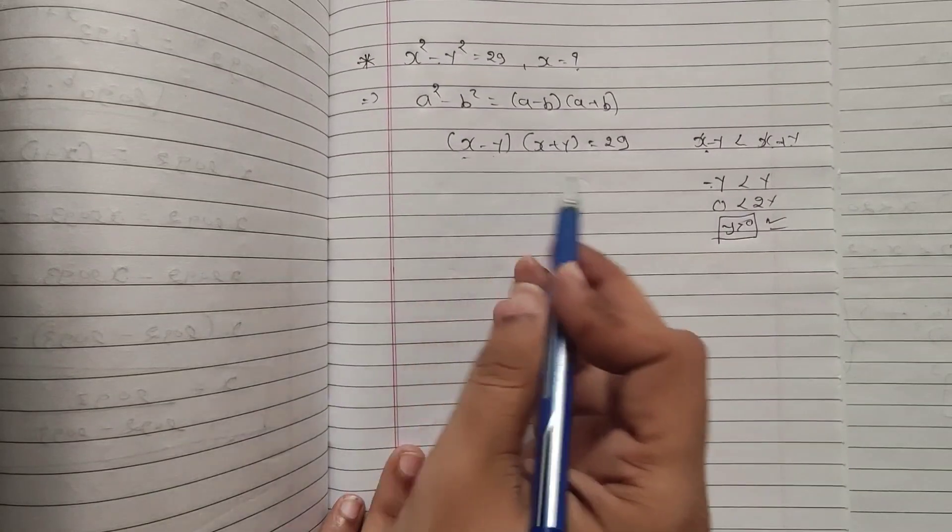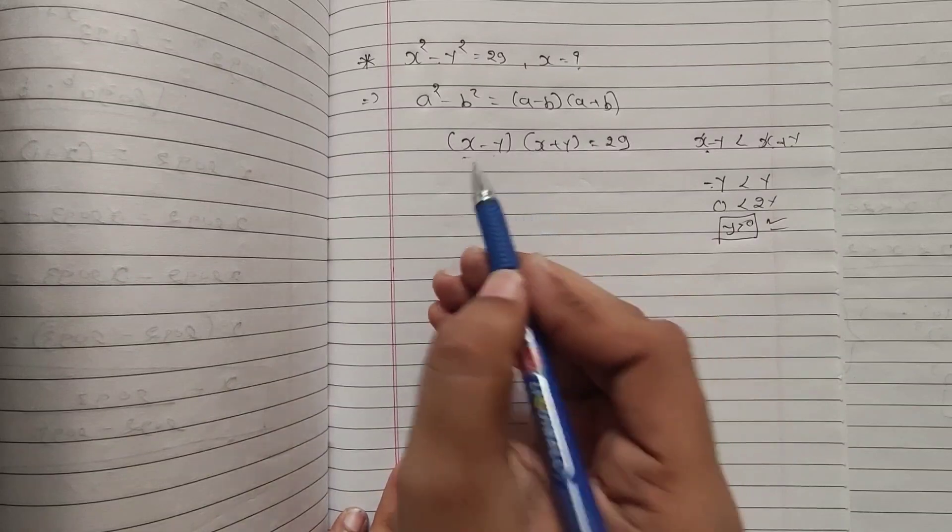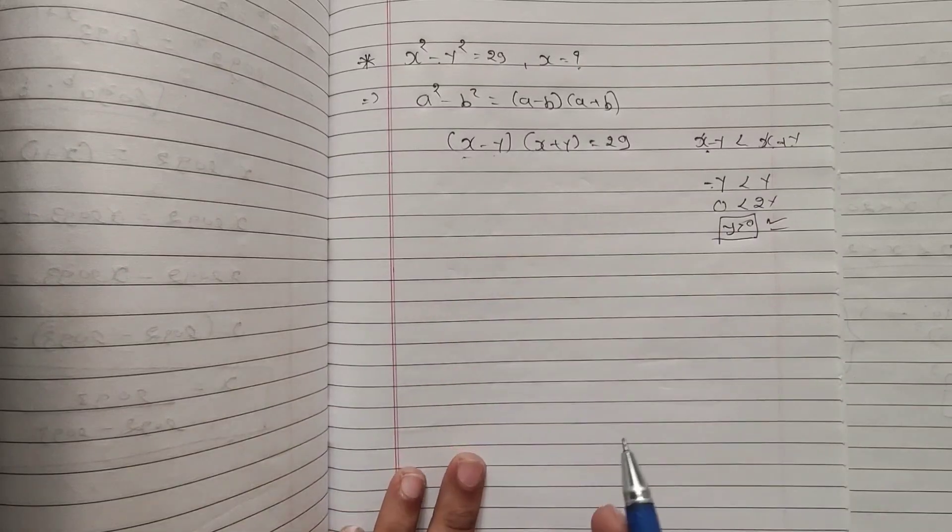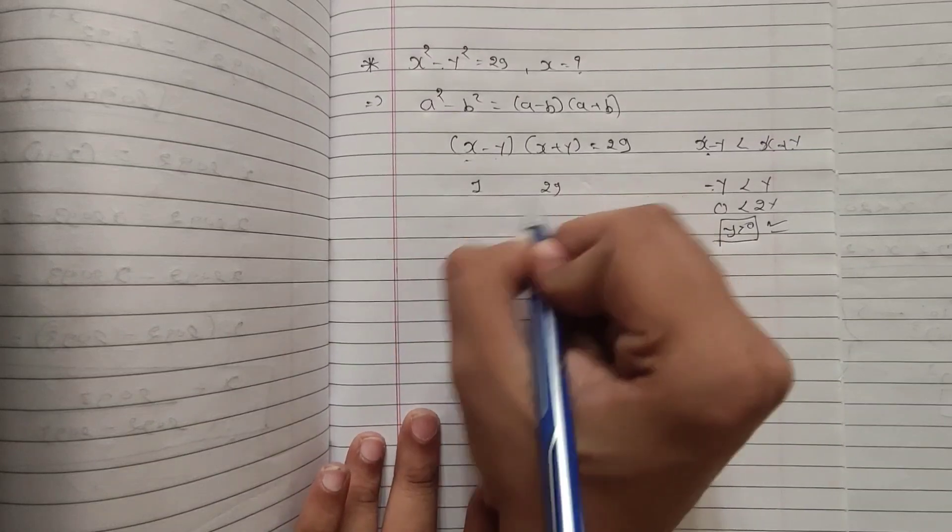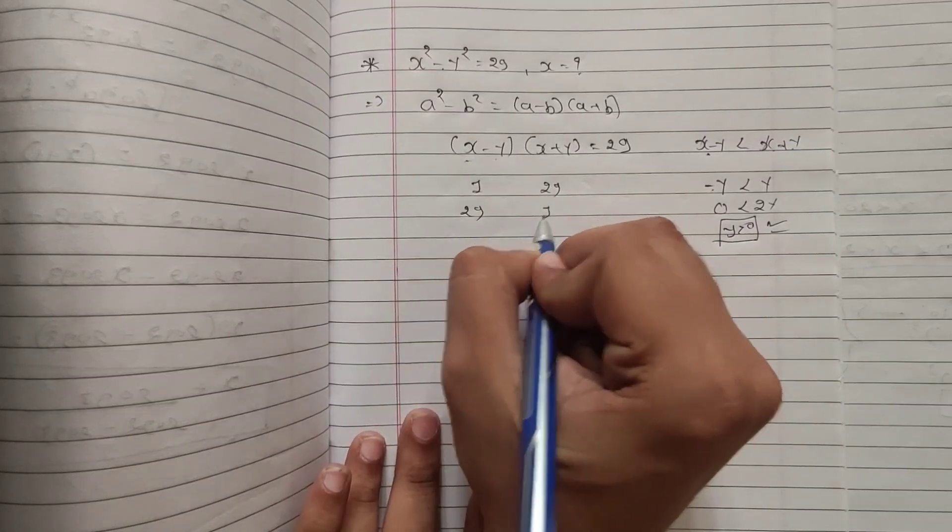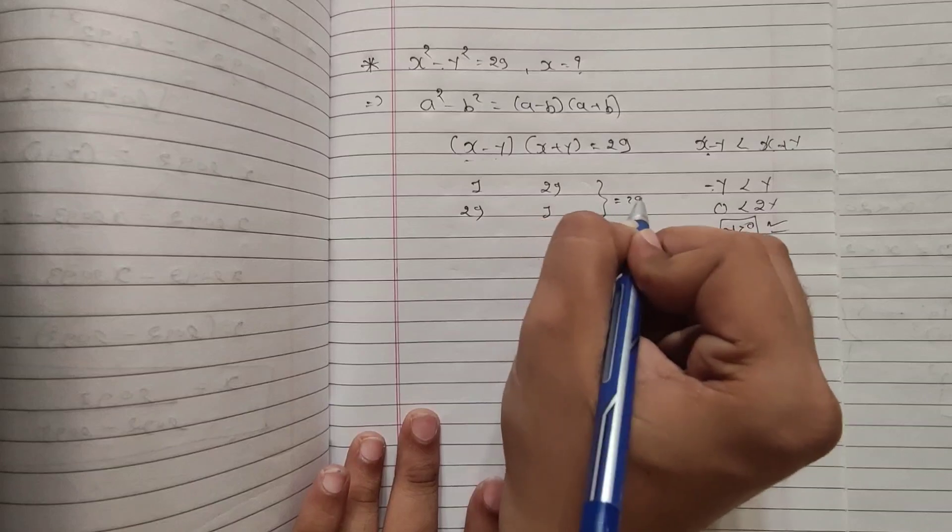Now pay attention here. I have to find two numbers of which multiplication will be 29. So there is only one pair: 1 into 29 and 29 into 1 which is equal to 29.